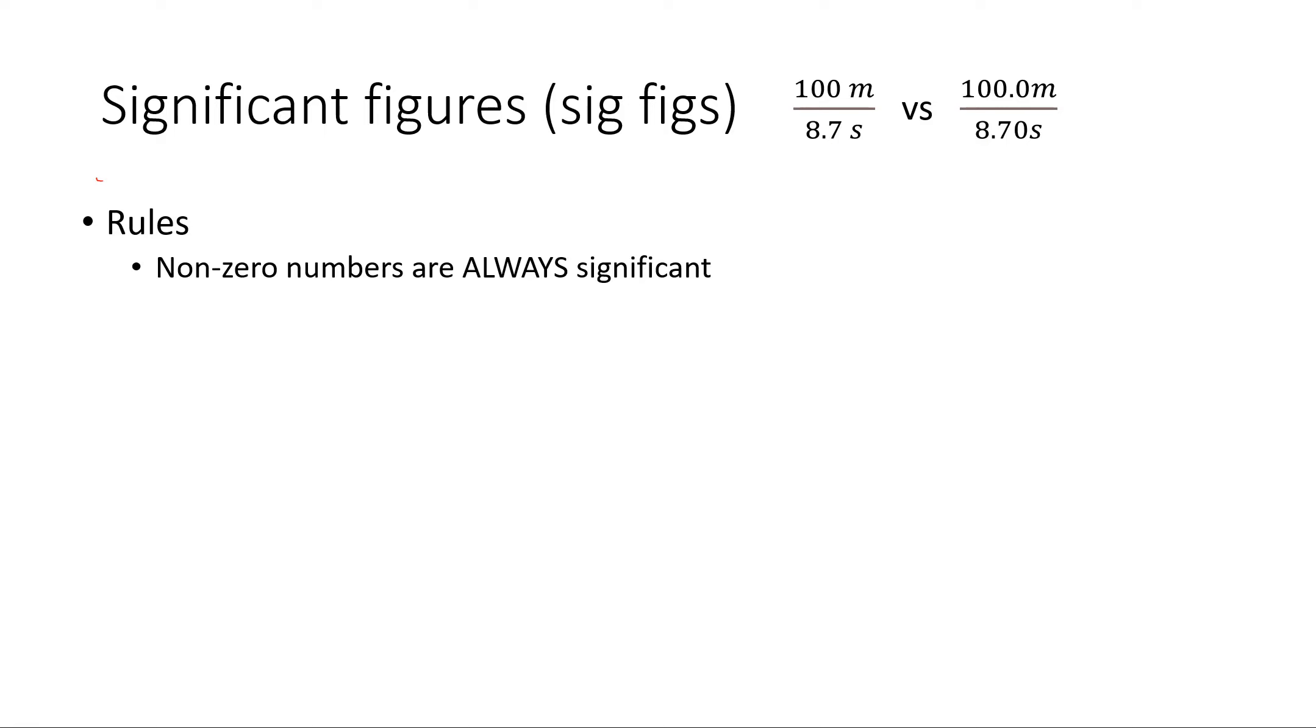Now zeros between non-zero digits are also always significant. So let's say for example, rather than 100, I report 101. Now that changes things. We know the ones are significant, but because the zero is between non-zero digits, that's also significant. So that would be three sig figs.